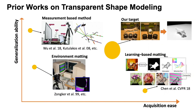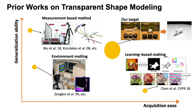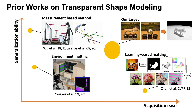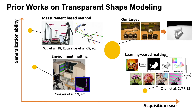Environment matting methods model transparent shape appearance but cannot recover full geometry. Measurement based methods can achieve high quality reconstruction but require careful calibration. In contrast, our method reconstructs full geometry of transparent objects with a small number of images captured in an unconstrained environment.